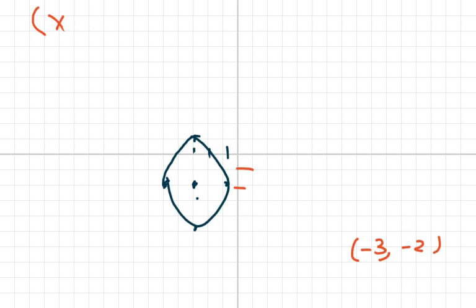So my equation is going to be x minus a negative 3 plus y minus a negative 2 squared. So squared equals 1.